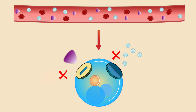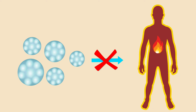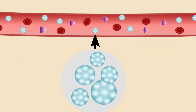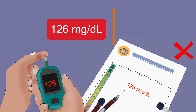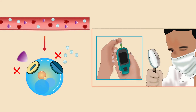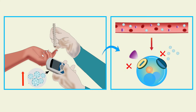Glucose will not be able to enter the cells if there is no insulin. It will also not enter if the cells do not respond to the insulin signal well. If glucose does not enter the cells, the body will not get enough energy. The glucose will remain in the blood, raising blood glucose levels as seen in blood reports. Hence, the root cause of diabetes is glucose not being able to enter the cells. A person has diabetes if the mechanism of entry of glucose is impaired.